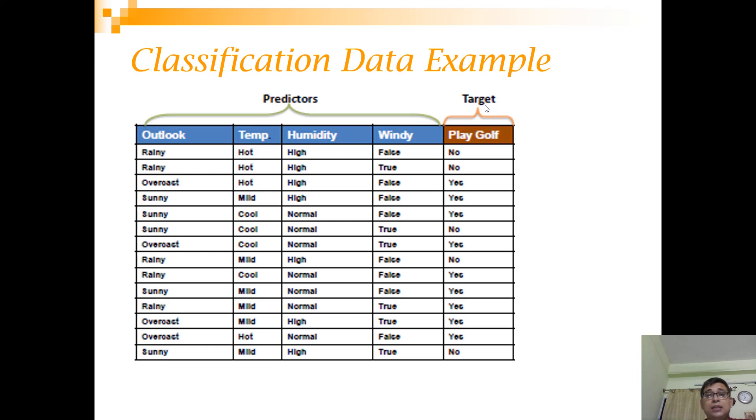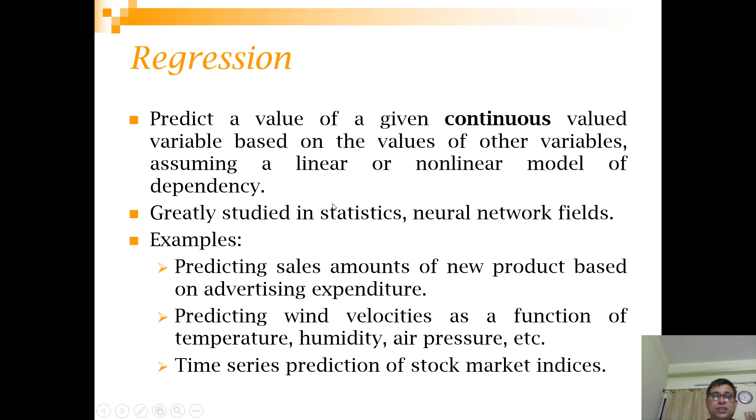One important thing that I want to pay close attention to is that classification deals with a fixed set of categories. When your target play golf has values like yes and no, you cannot expect that your classification algorithm will give an output which is maybe. Similarly, if you treated your system to learn the species of the bird, whether it is a duck or a chicken, and if you give it a penguin, it cannot say that it is a duck or a chicken. It has to be a fixed set of categories.